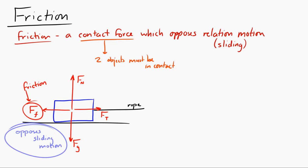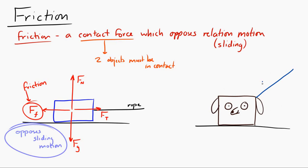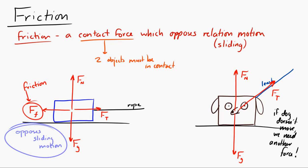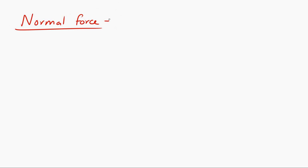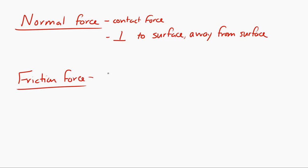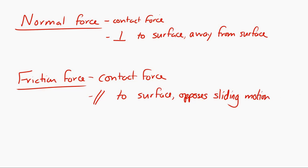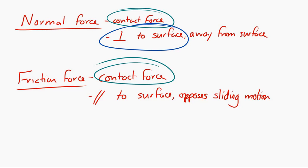Friction can also exist even if an object doesn't slide. For example, a dog on a leash that doesn't move has a normal force upward, gravitational force downward, tension in the direction of the leash, and a friction force to the left to oppose motion. Normal force is perpendicular to the surface and away from it, while friction force is also a contact force but parallel to the surface of contact.